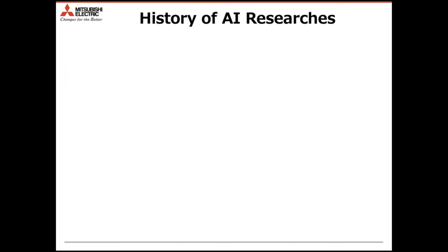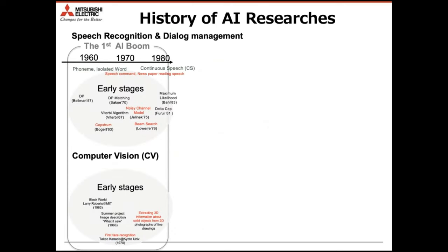Let me talk about the history of artificial intelligence research. We have domains of speech recognition, dialogue management, and computer vision. In the first generation AI boom, in the speech recognition field, we had to think about features — what type of feature is good for speech recognition. MFCC was proposed, and sequential decoding with the Viterbi algorithm and beam search. The noisy channel model allowed us to gradually recognize phonemes and word sequences, from speech commands to isolated words to sequential word sequences like newspaper reading. In computer vision, extracting 3D information about solid objects from 2D images was the main target.